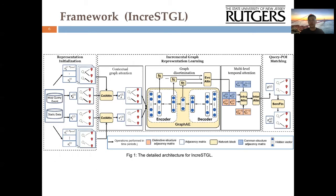Figure 1 presents an overview of our proposed framework IncrSTGL, which basically consists of three major parts: the representation initialization module, the incremental graph representation learning module, and the query-POI matching module.